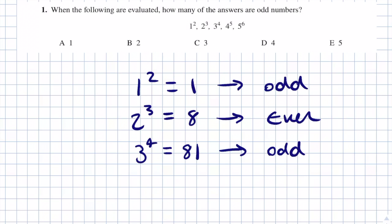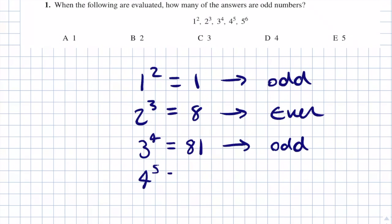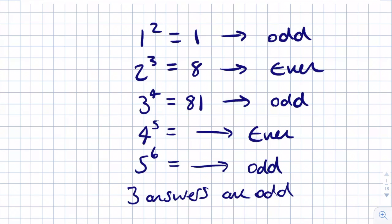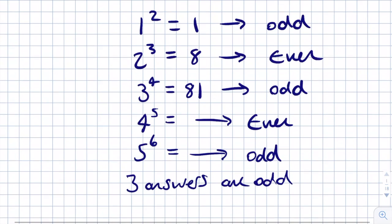We can say the same for 4 to the power of 5: any even number raised to any power is always going to be even, so that's even. And applying the same concept to 5 to the power of 6, which is going to be odd. Therefore, we've got 3 answers which are odd. Our final answer is C.